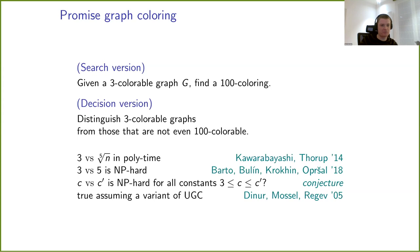The conjecture for now is that at least for any constants, it should be NP-hard. Probably it's hard for a much wider regime, but at least we'd like to prove it for any two constants C versus C prime — coloring is NP-hard.